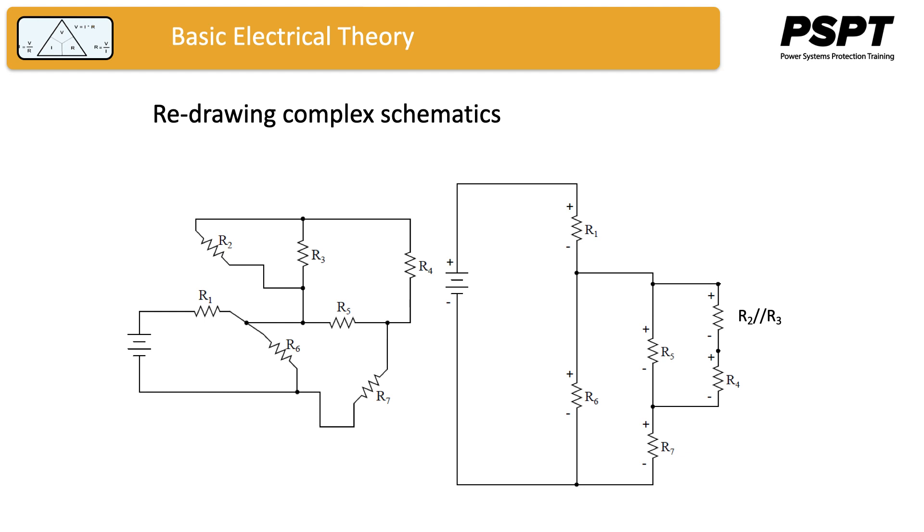That replacement resistor is now in series with R4, and it can be replaced by one resistor as well. And that one resistor would be the equivalent of R2 in parallel with R3 plus R4, which it's in series with.